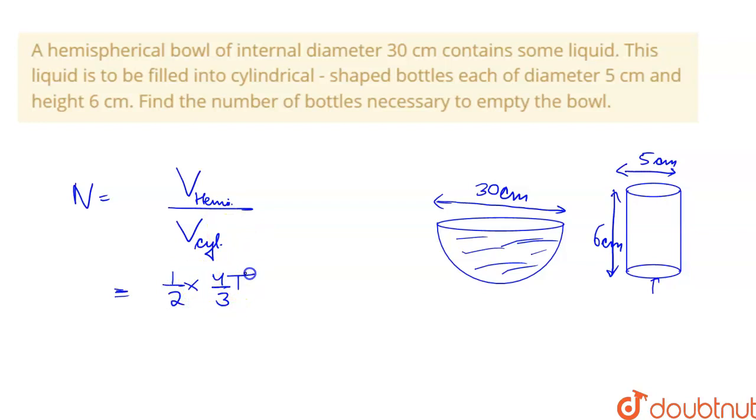And we have to write the radius upon volume of cylinder. What is the volume of cylinder? Pi r square h. So pi into r2 square into h.